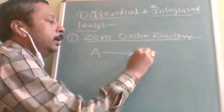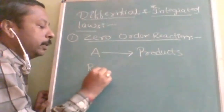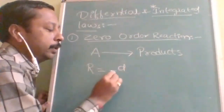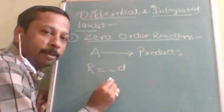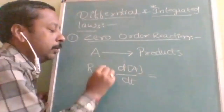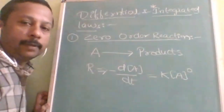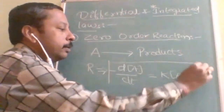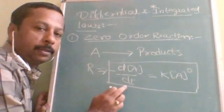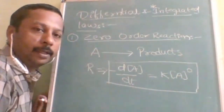First let us see zero order reaction. Suppose a reaction is: A gives product. The rate of reaction — since A is a reactant — is: minus dA/dt. According to the rate law the formula is: k into A to the power of zero, since it is a zero order reaction. This expression is called the differential rate law, because d/dt is present.